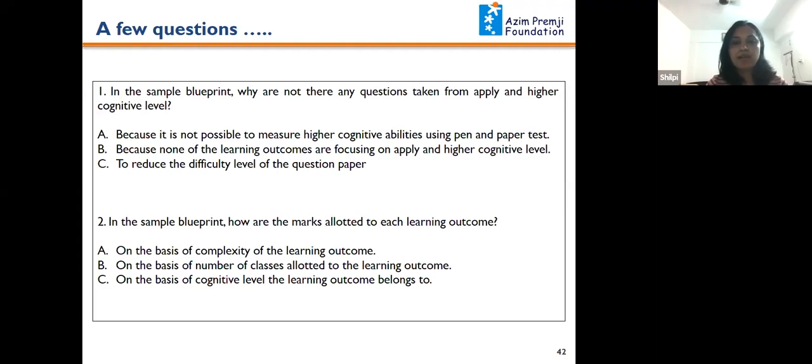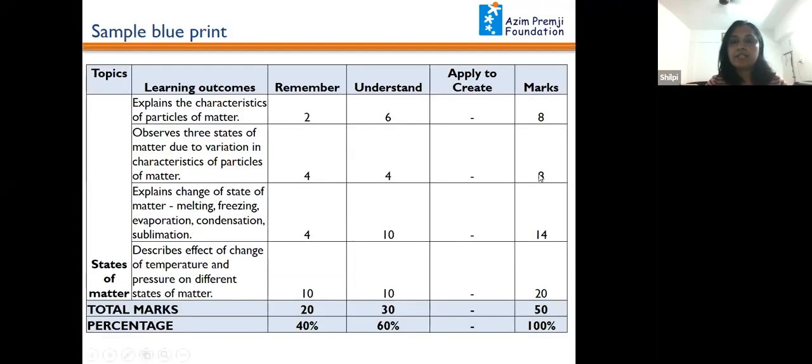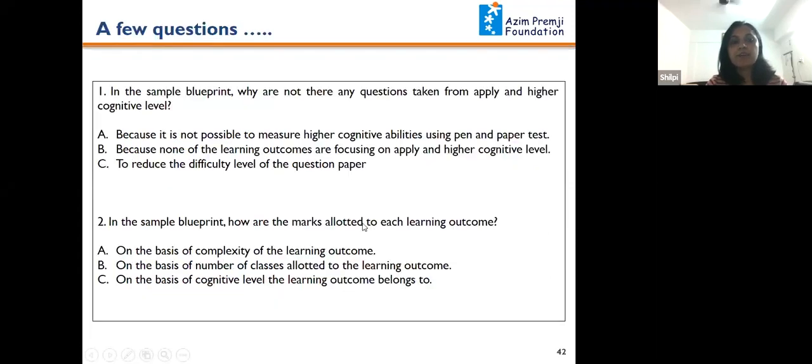So basically I was focusing on the last column of the blueprint where I was asking how are the marks allotted to each learning outcome. Most of you have answered it correctly. The answer is B.